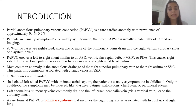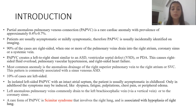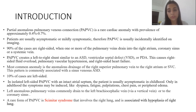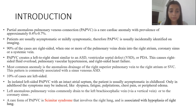This causes right-sided fluid overload, pulmonary vascular hypertension, and right-sided heart failure. The most common anomaly is the anomalous drainage of the right superior pulmonary vein to the right atrium or superior vena cava. This pattern is commonly associated with sinus venosus type of atrial septal defect.